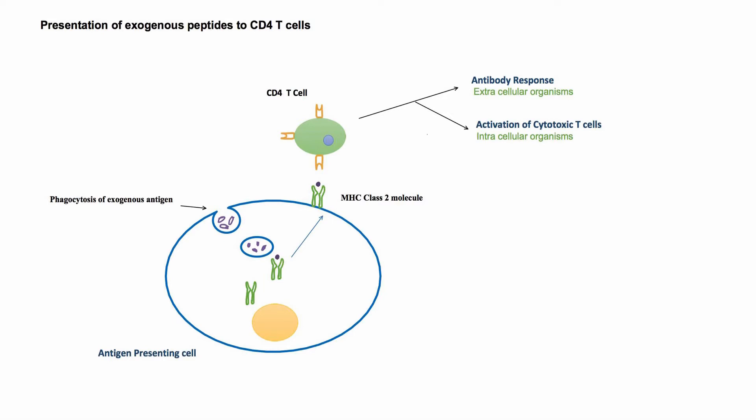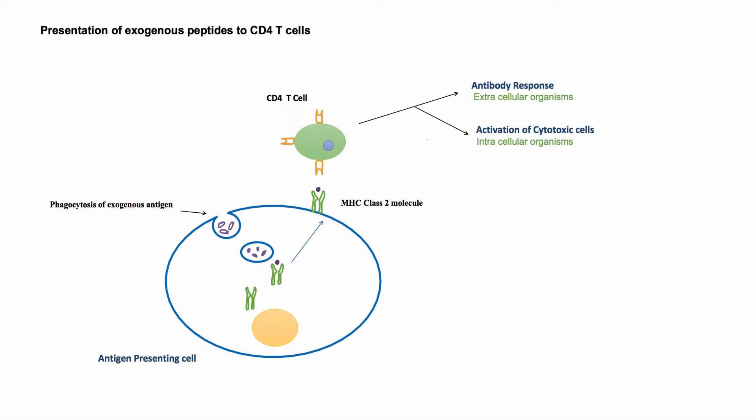These cells can recognize peptide antigens only when presented on HLA molecules. To initiate an immune response, in the first step antigen presenting cells ingest pathogens by phagocytosis. Resulting peptides from breakdown of proteins derived from these pathogens are then combined with HLA class 2 molecules in the endosome. The resulting complex of HLA class 2 molecules and peptides is then transferred to the cell surface.